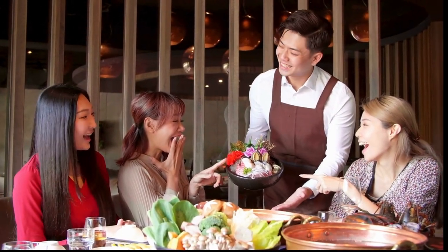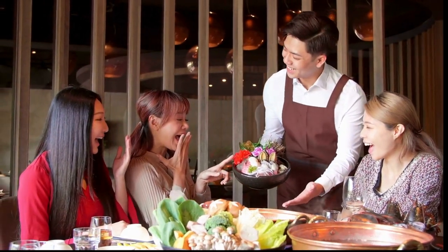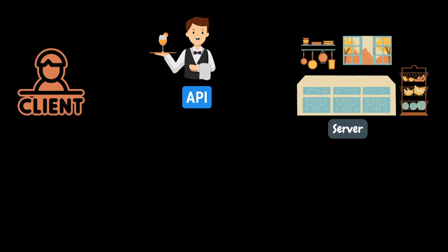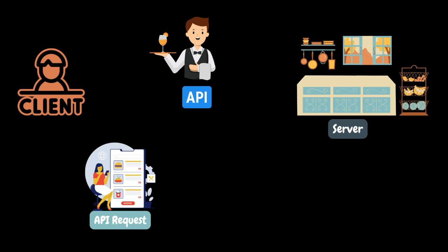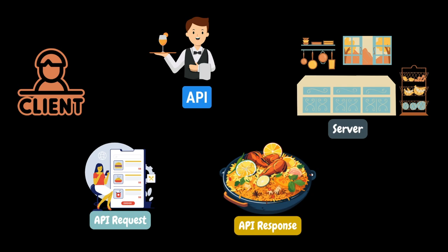The waiter does not reveal the kitchen's internal process because that is not relevant to us. Now let's correlate these components into API technical terms. You represent the client making a request to the server. The waiter acts as an API facilitating communication between you, the client, and the kitchen, the server. The kitchen is like a server that processes the request, performs the necessary actions, and sends back a response. Your order details are like an API request, and the food delivered is like an API response. Just as a waiter simplifies ordering food, an API simplifies communication between different software components, acting as a bridge ensuring smooth interaction between the client and the server.